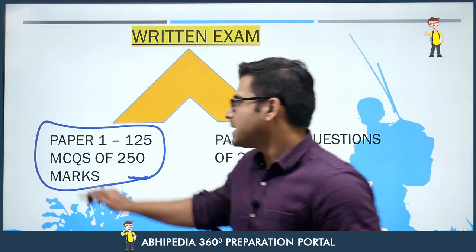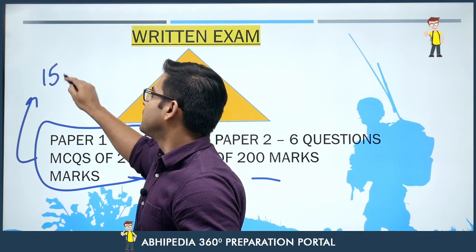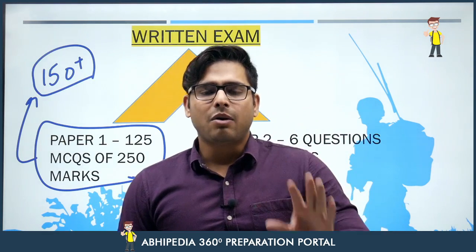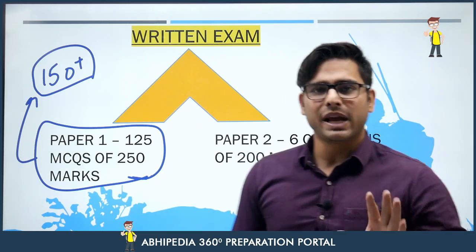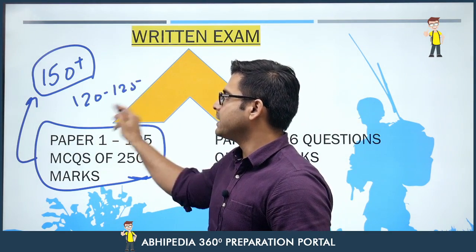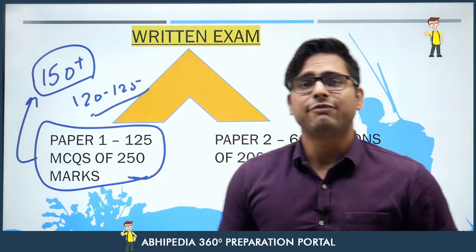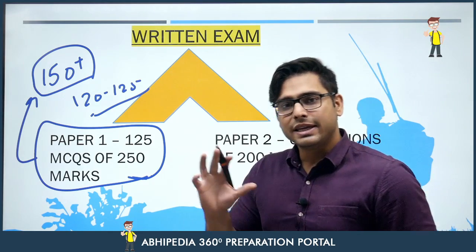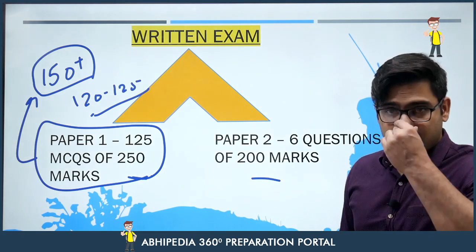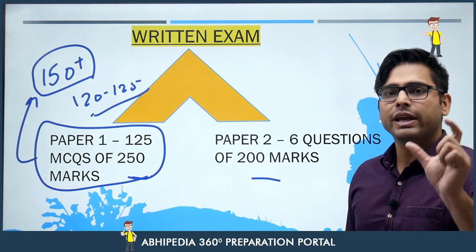Paper 1 has 125 questions worth 200 marks. I'm telling all CSE aspirants: target at least 150-plus marks. Even though vacancies are good and the cutoff will likely be within 120-125, I'm telling you to aim 25 marks extra — because that 25 marks surplus will be the game changer. Target 150 marks; it's absolutely achievable.